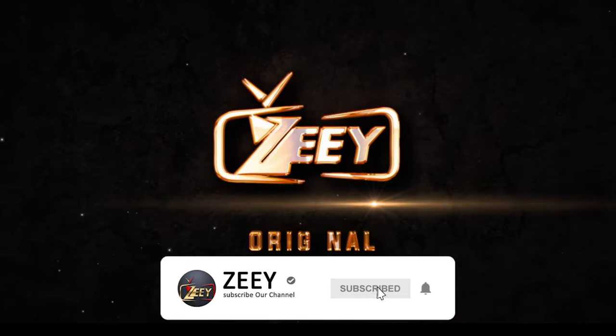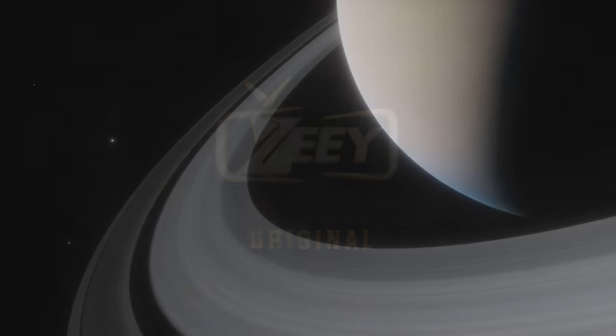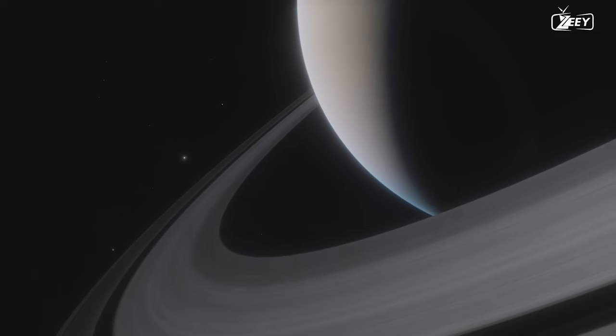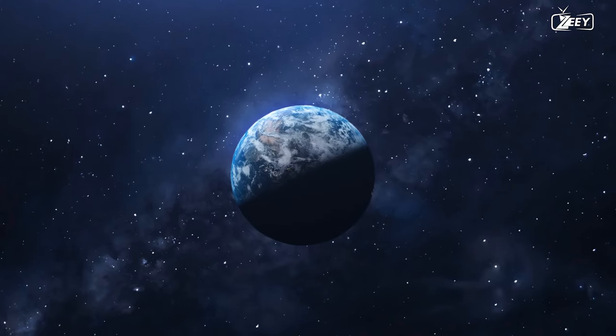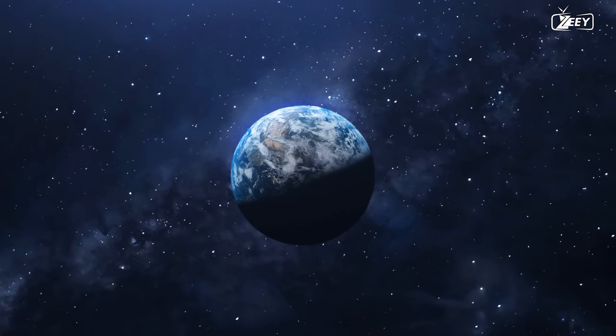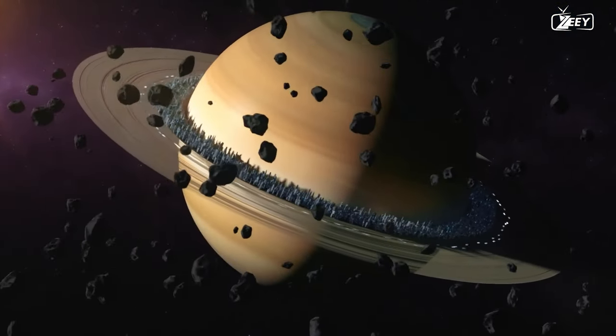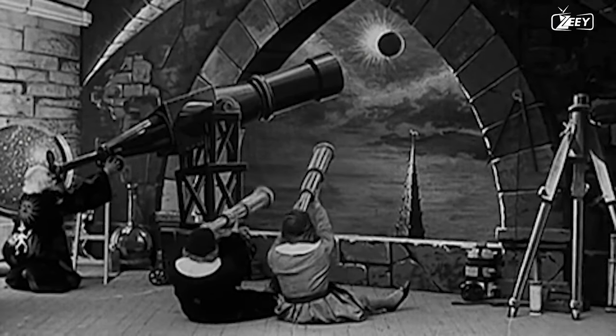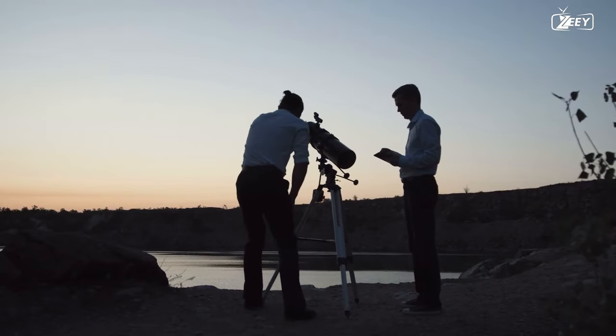Before inquiring why the Earth does not have beautiful multicolored asteroid rings like Saturn's, we must first determine why Saturn has asteroid rings. Since the invention of the telescope in the 17th century, astronomers have explored the universe and uncovered its most profound mysteries.